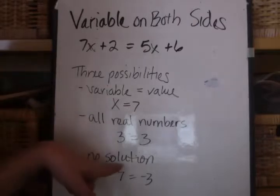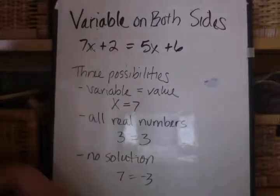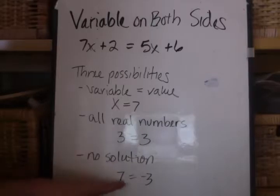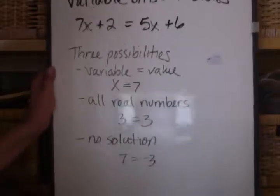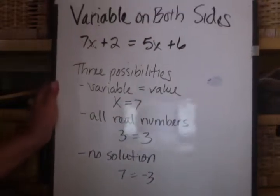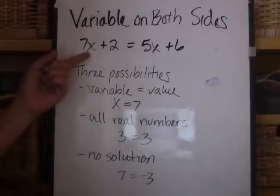And finally, the last is there's no solution, which means that there is no value for x that would make this equation true. And you'll see that when, at the end of solving the equation, you'll have some number equaling some other number. So when you see that, at the end of the equation, some number equaling some other number, then you'll know there's no solution, meaning there is no value or number I can put here for x that would make the equation true.